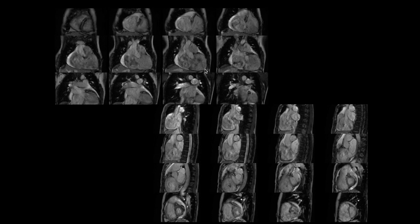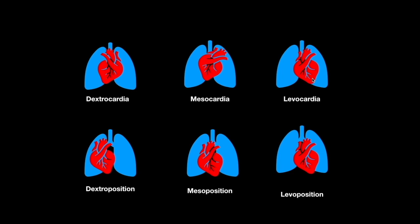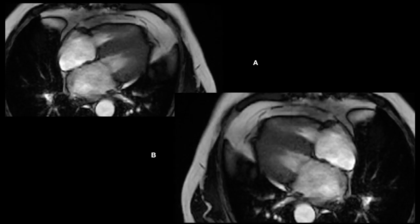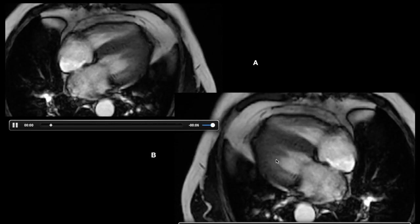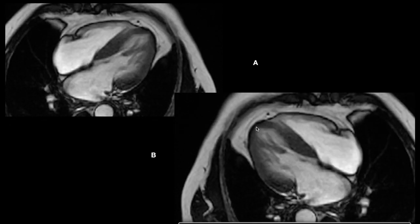If the cardiac axis is directing to the left, it will be levocardia. If it is directing anteriorly and inferiorly, it will be mesocardia. If it is directing to the right, it will be dextrocardia. Similarly, if the heart is predominantly positioned to the left of the thorax, it is levoposition; if predominantly central, it is mesoposition; and if on the right side, it is dextroposition. In scene A the axis directs to the left — levocardia — and in scene B it directs to the right — dextrocardia.